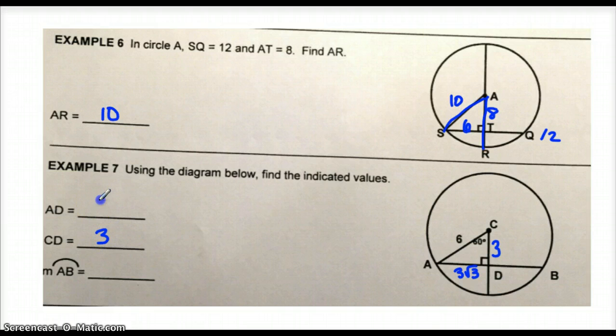AD must be 3 root 3 units long. And the measure of arc AB has to be twice as big as this arc here because the radius bisects that chord, which means it also bisects its arc. So if the central angle is 60, then arc AD is 60. This arc here must also be 60 for a total of 120 degrees.